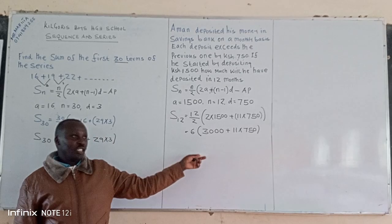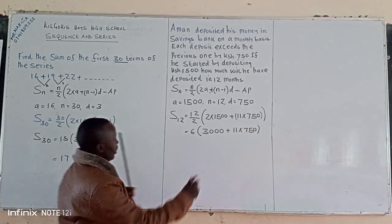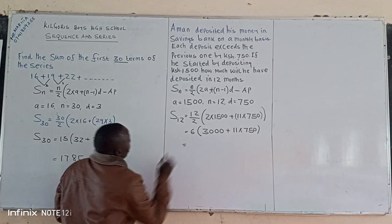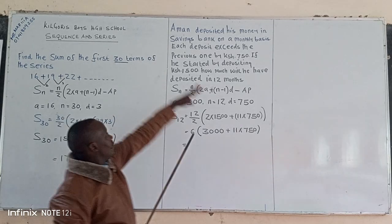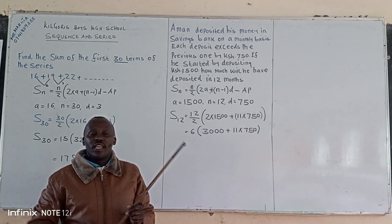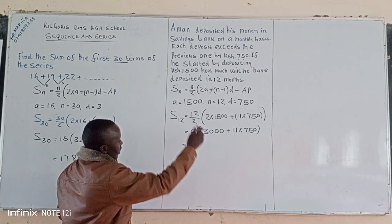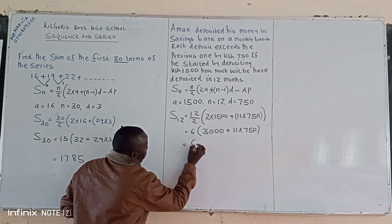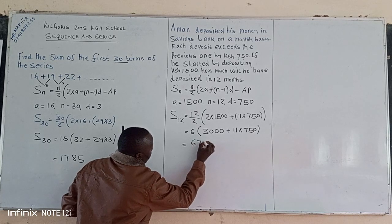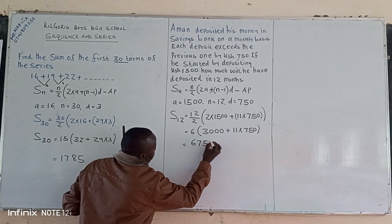So if you can put this one on the calculator, you will get the money that you will have deposited in the 12 months as 67,500.